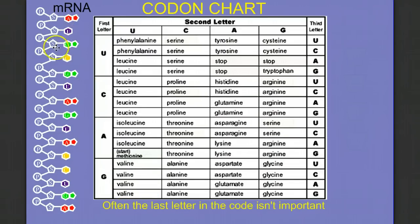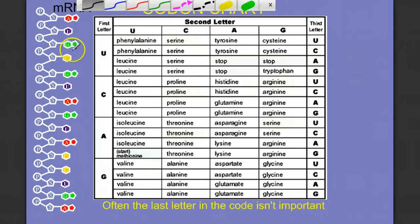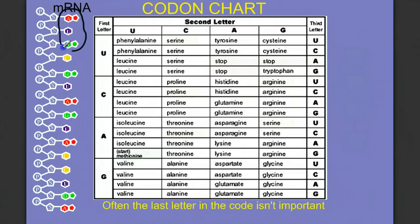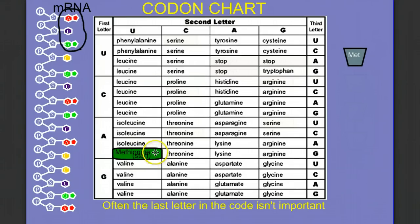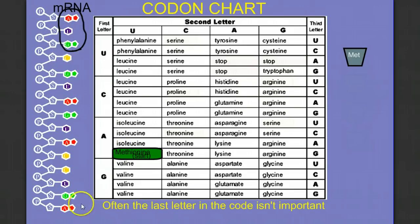Let's decode this piece of messenger RNA. The first codon is AUG. Going to the codon chart — first letter A, second letter U, third letter G — we find methionine. It turns out methionine is often referred to as the initiation codon, or the start codon, because it's the codon that tells the ribosome where to begin translation. So theoretically all proteins would have methionine as the first amino acid, although with some later modifications that may be altered — but that's the start codon.